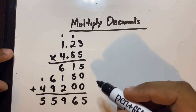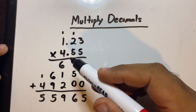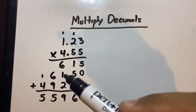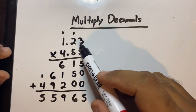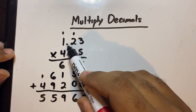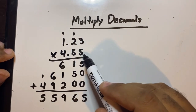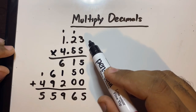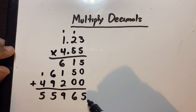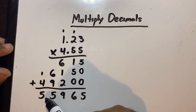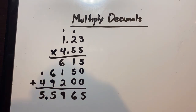Now we have to find out where the decimal point goes. The decimal point when it comes to multiplication does move. Here's a really good trick: there are two decimal places here, and two decimal places here, so that means there are four in total. Starting from the end of our answer, we count four places to the left — one, two, three, four — this is where our decimal point goes.